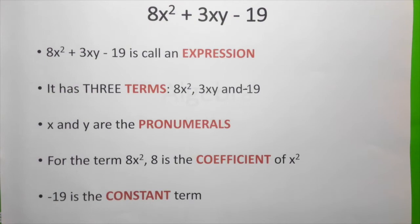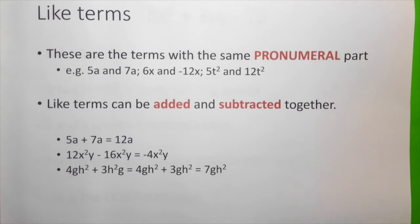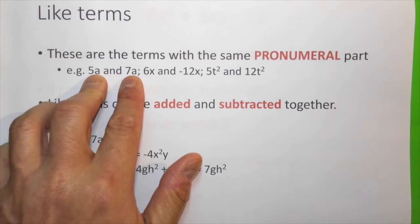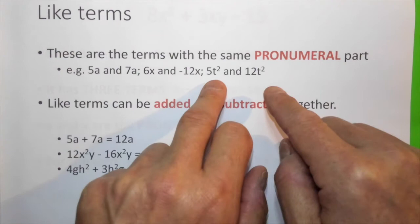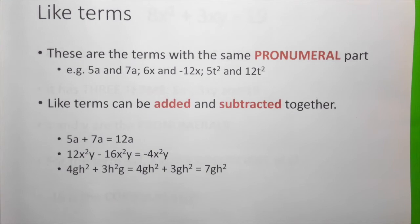Now in any expressions, we've got to look for like terms. These are the terms with the same pronumeral parts. For example, 5a and 7a, the same pronumeral part which is a. 6x and minus 12x, x is the same pronumeral part. And 5t squared and 12t squared, t squared is the same pronumeral part.